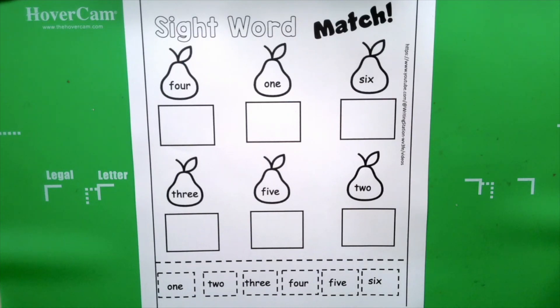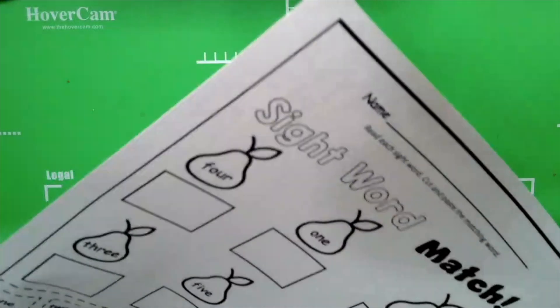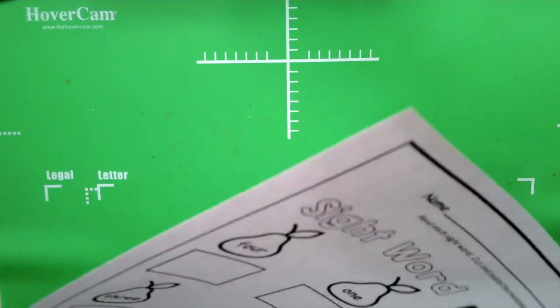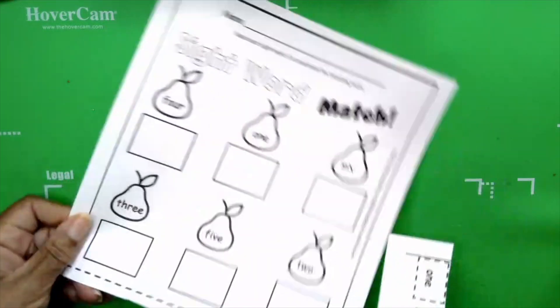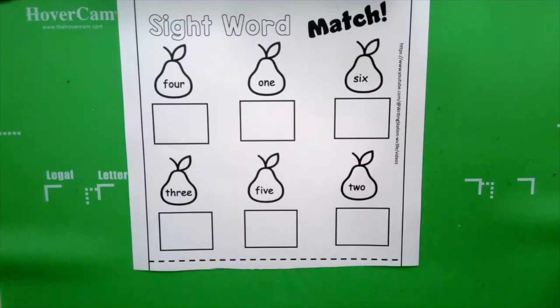Okay, the first thing you need is your scissors. And if you've worked with me before, you know that I like to cut all of my cutouts, whether it's words or pictures, I like to cut them all out at the same time. That keeps me organized, and I don't have to go back and forth cutting.